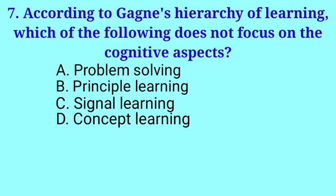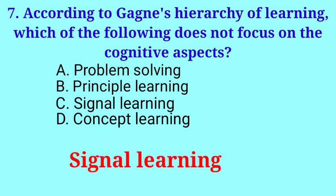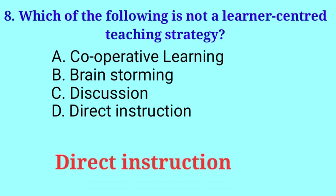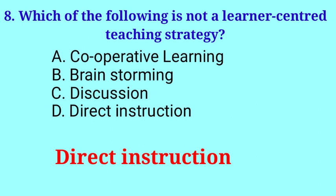According to Gagne's hierarchy of learning, which of the following does not focus on the cognitive aspects? Answer: Signal learning. Which of the following is not a learner-centered teaching strategy? Answer: Direct instruction. But cooperative learning, brainstorming, and discussion are learner-centered teaching strategies.